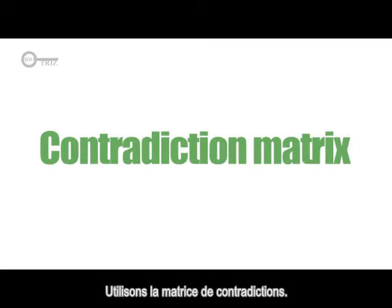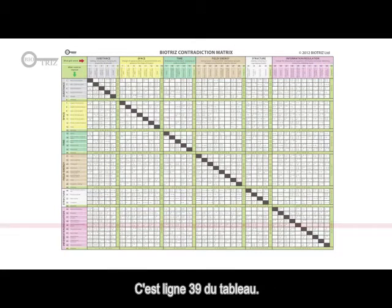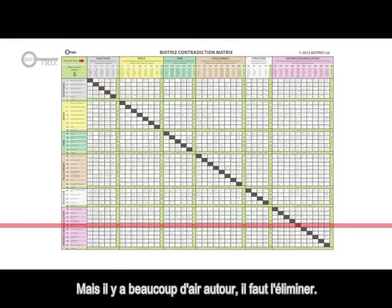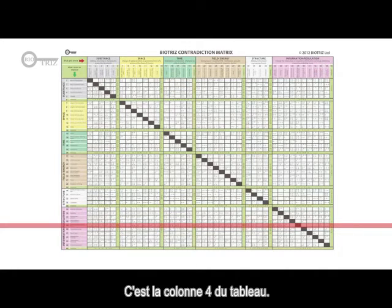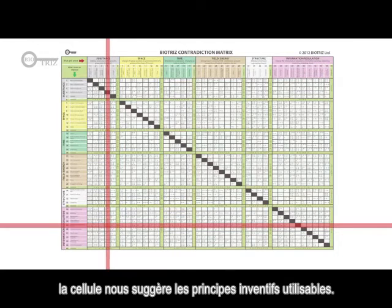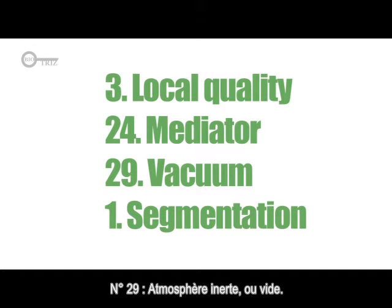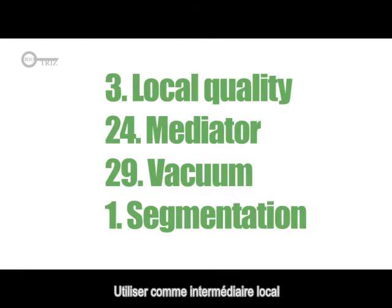Let's use the contradiction matrix. We need to eliminate the object-generated harmful factor — row number 39 in the matrix. But there is a lot of air around, the limiting parameter being quantity of substance — column number 4 in the contradiction matrix. The crossing of the 39th row and the 4th column gives us the cell with the numbers of recommended inventive principles: number 3 local quality, number 24 mediator, number 29 inert atmosphere or vacuum, and number 1 segmentation. The solution is: use the mediator of segmented inert gas locally.